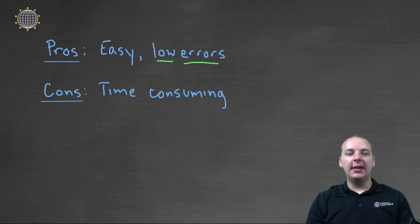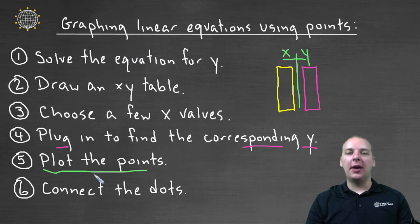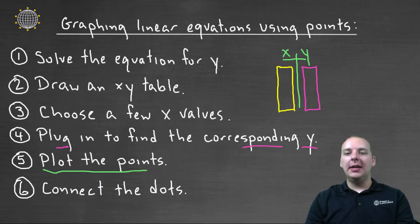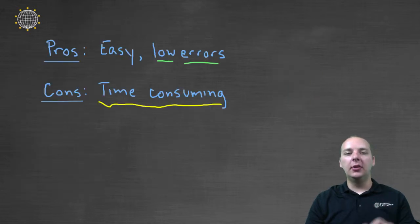The downside, there is a negative to this method, is that this is very time consuming. Doing six steps to graph a linear equation is kind of a lot, because you have to solve for y, make your table, pick the x's, plug them all in, find the y's, plot the points, connect the dots, it's just very time consuming. And it turns out some of the other techniques that we're going to learn coming up are a lot faster. So if we were to come back and graph some linear equations towards the end of the course, this would probably not be the ideal way of graphing lines. But as we're just learning how to graph linear equations, this is a great way to begin. Let's wrap up this video with an example.